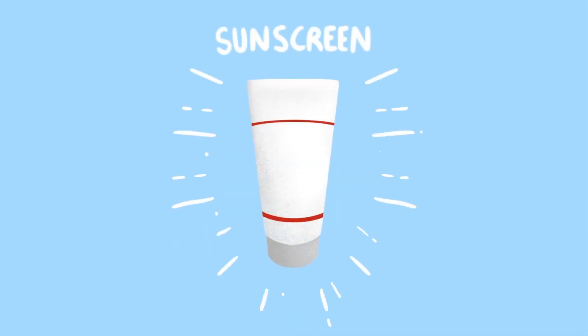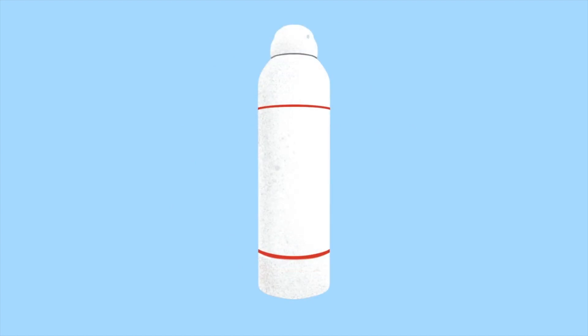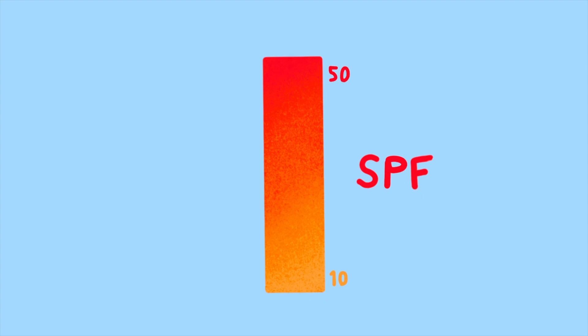And that's why sunscreen is here to make sure you're covered. Sunscreen comes in different forms, from lotions to sprays. Both offer great protection from UV rays. The SPF, or sun protection factor, on the sunscreen label is a measure of how protective the sunscreen is.